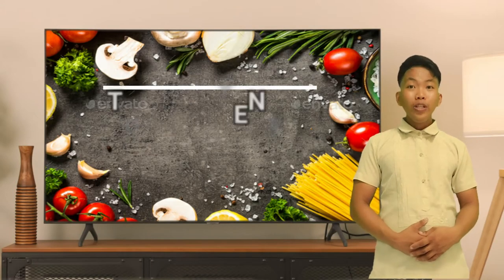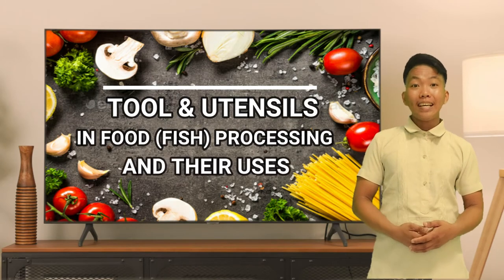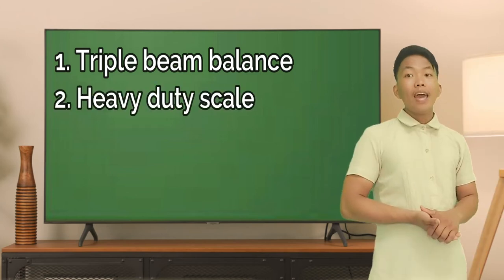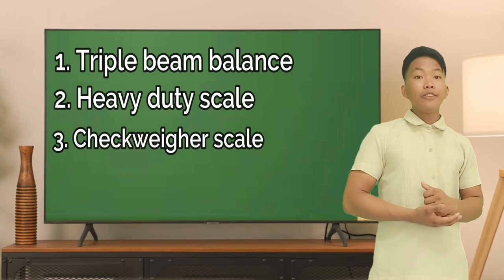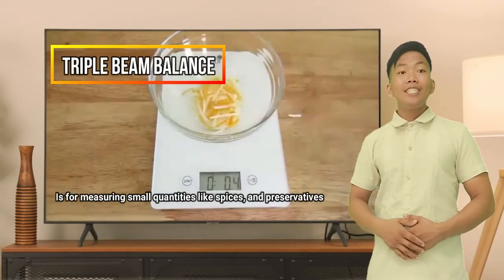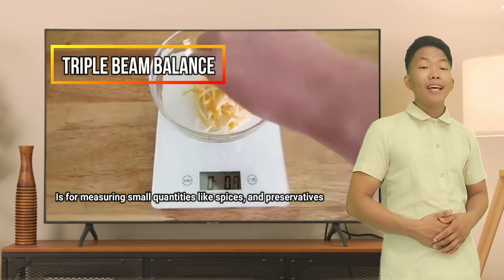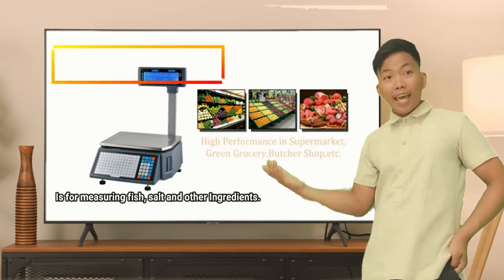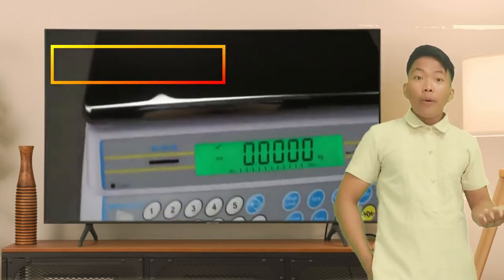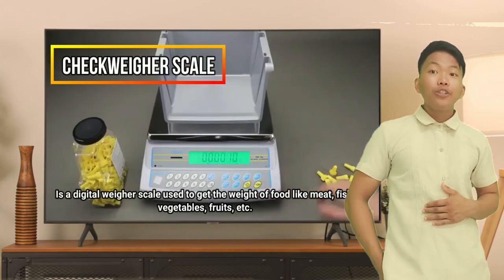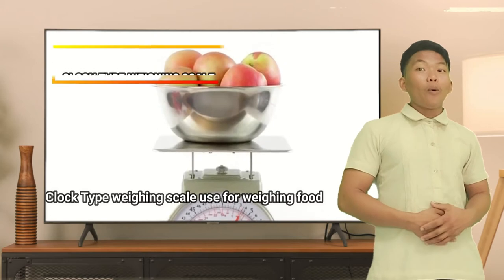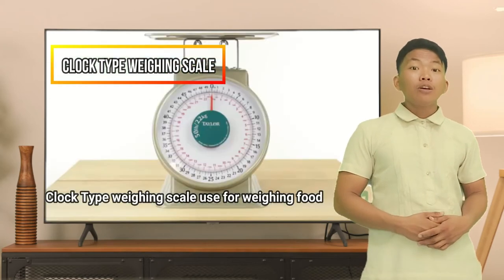Let us discuss tools and utensils in food and fish processing and their uses. First, we have measuring devices. Under this, we have the triple beam balance, the heavy duty scale, the check weighing scale, and the clock type weighing scale. The triple beam balance is for measuring small quantities like spices and preservatives. The heavy duty scale is for measuring fish, salt, and other ingredients. The check weighing scale is a digital weighing scale used to get the weight of food like meat, fish, vegetables, and fruits. The clock type weighing scale is a type of weighing scale used for weighing food.